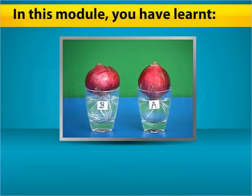Meristematic tissue is a group of cells that divides and grows continuously and hence causes a plant to grow.